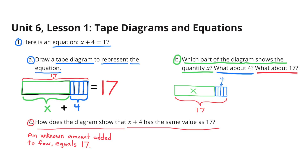The green rectangle represents x, the four smaller rectangles represent 4, and together they represent 17. Part B: Which part of the diagram shows the quantity x? The quantity x is represented by the larger green rectangle. The four smaller rectangles represent the value 4. The green rectangle and the four smaller blue rectangles combined equal 17.